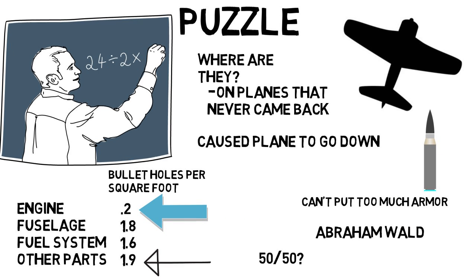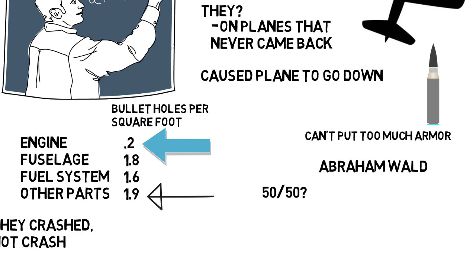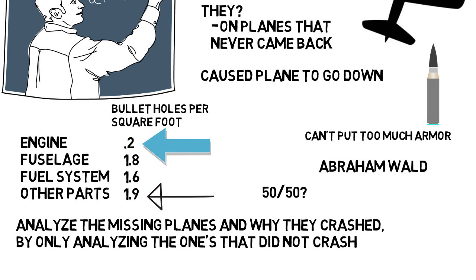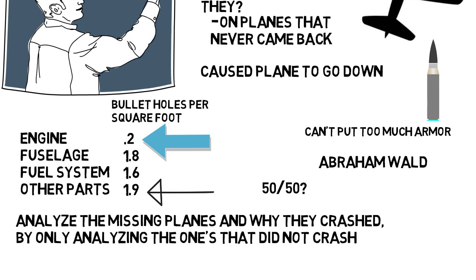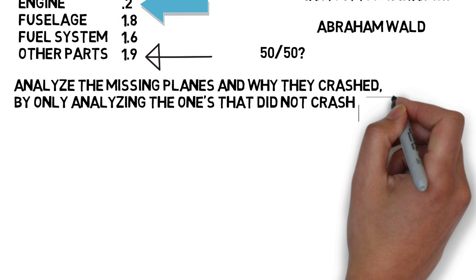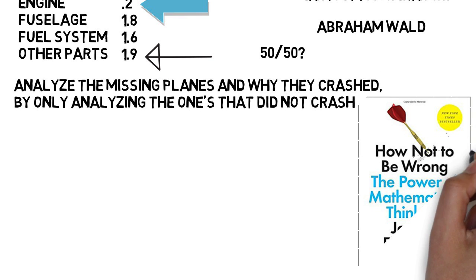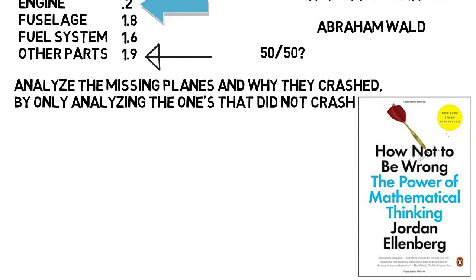By using this logic and analysis, the mathematician was able to analyze the missing planes and why they crashed, by only analyzing the ones that did not crash. This is one of the first stories from the book How Not to Be Wrong: The Power of Mathematical Thinking, which will be what this video is about.